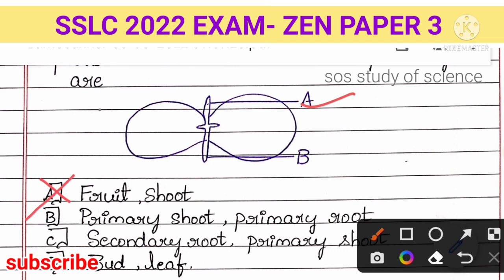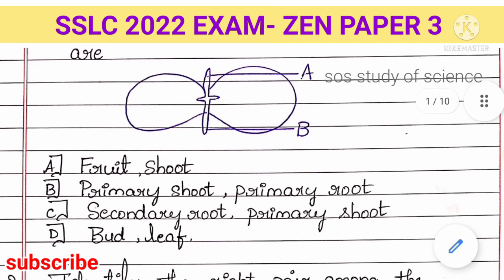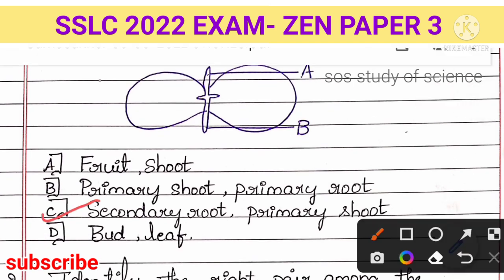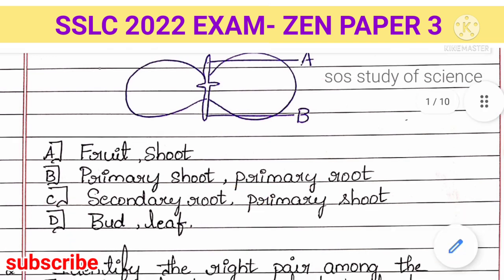Option B is 'primary shoot and primary root.' Primary means something which is happening for the first time. The part growing upwards first is the shoot, so I can consider it as primary shoot, and the one growing towards the soil is the primary root. Checking options C and D: secondary root doesn't match, and bud and leaf is also not correct. So the right answer is option B — primary shoot and primary root. This is how you analyze questions in the examination.